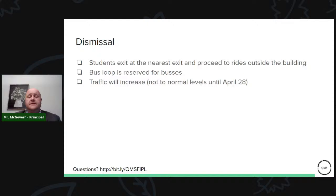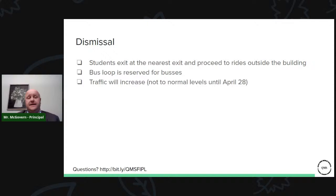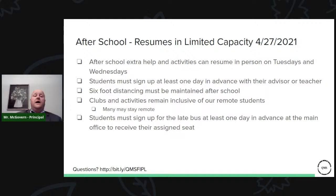Dismissal is straightforward: students exit the nearest exit and go around the outside of the building. The bus loop is reserved for buses. Note that there will be a second traffic change when Mansfield High School returns on approximately April 28th, so from April 5th you'll see a first increase in traffic, and then a second surge around April 28th.